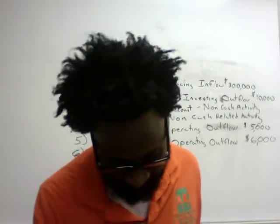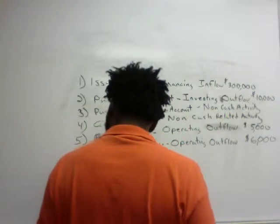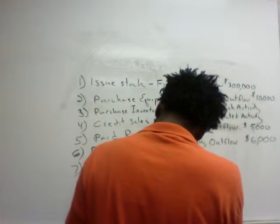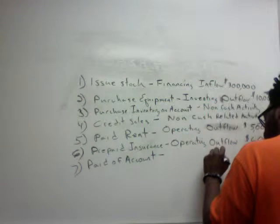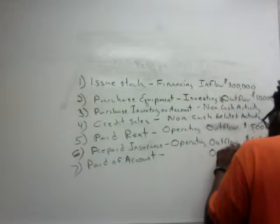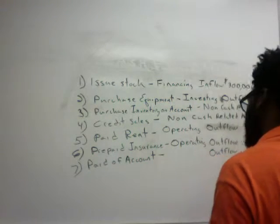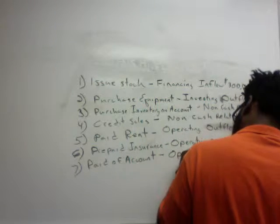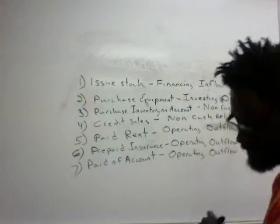Transaction seven: we paid $70,000 on account. The journal entry is debit accounts payable, credit cash. The fact that we credit cash makes it an outflow, and accounts payable being a current liability brings us back into the operating category. This is an operating outflow of $70,000.